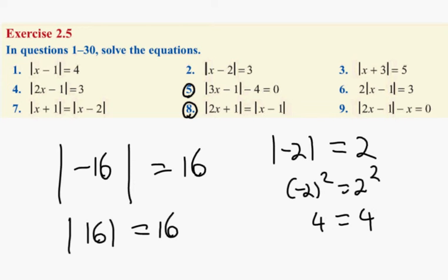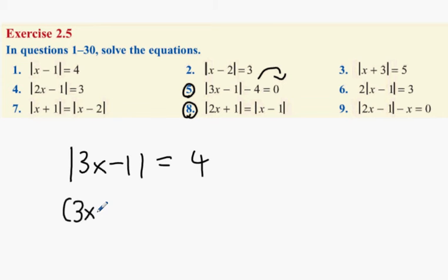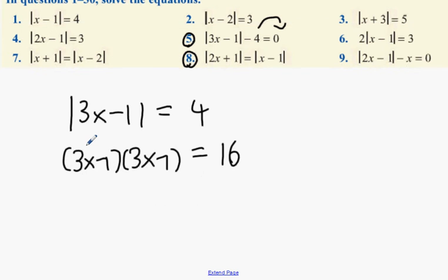You have an option when doing these questions. So what I suggest is this: you have the modulus of 3x minus 1 minus 4 equals 0. What I suggest you do is move the 4 over to the other side. What happens when you move the 4 over? It equals plus 4. Square both sides. When you square both sides it's going to be 3x minus 1 multiplied by 3x minus 1 equals 16 because the 4 squared.